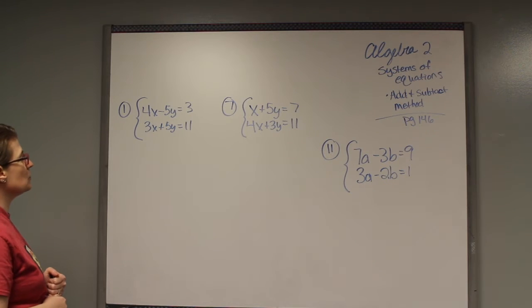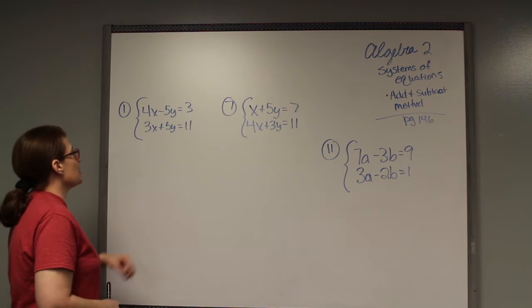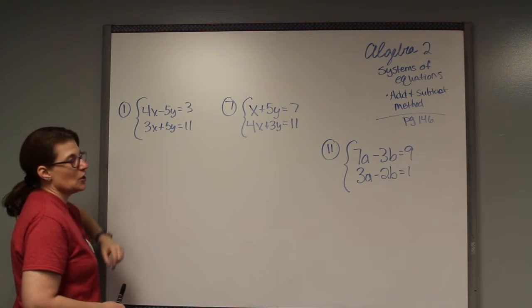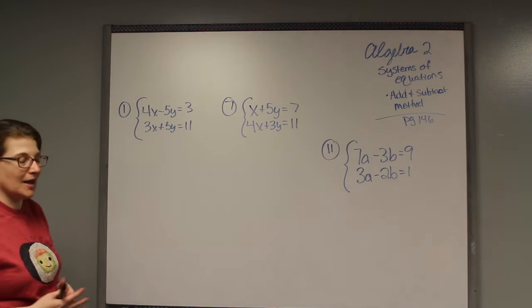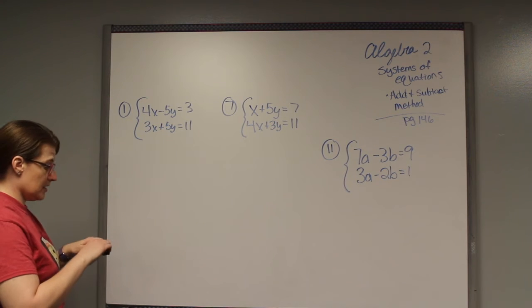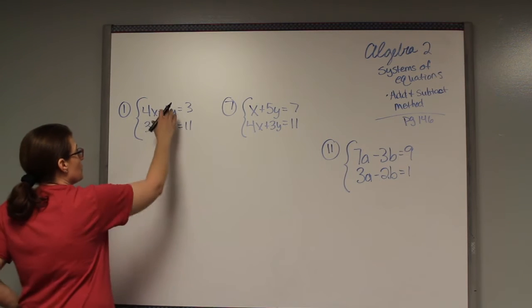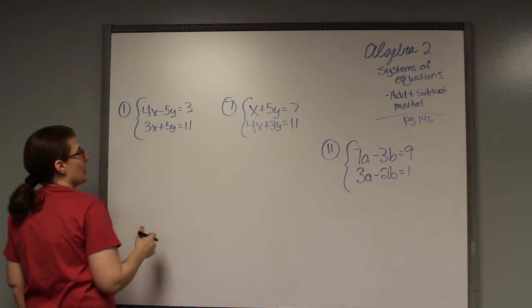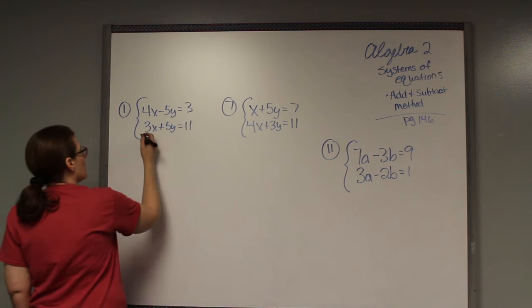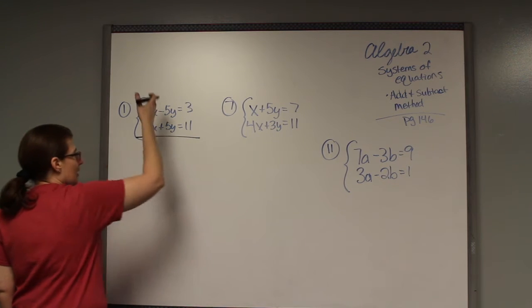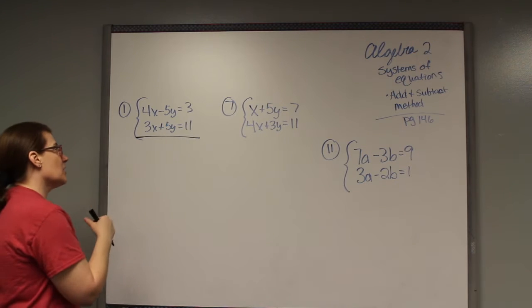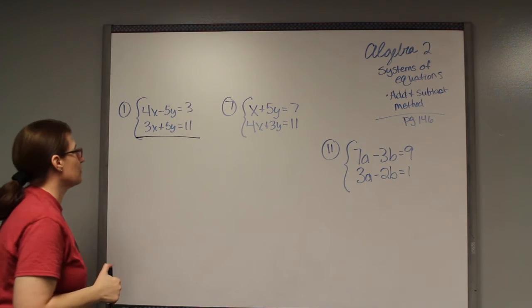The second method you're going to learn is elimination by adding and subtracting. What you want to do with the two equations is to get one of them to match the numbers. You want them to match so that you can cancel them out. Then we'll solve for x and plug it back in to solve for y.